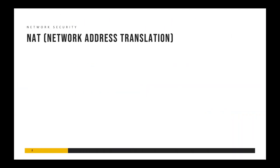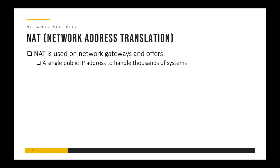NAT stands for Network Address Translation. It is used on network gateways. The biggest advantage is that it allows the use of a single public IP address to handle thousands of internal systems. So if you have a company with thousands of internal systems that need to communicate over the internet, ideally you'd need thousands of public IP addresses — but IP addresses are expensive. NAT is the perfect solution, allowing a single public IP address to support thousands of internal systems.